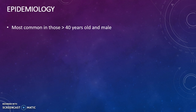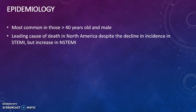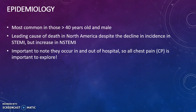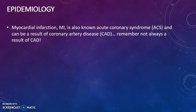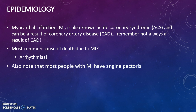Epidemiology. MI is most common in those who are over the age of 40 and male. It's the leading cause of death in North America, despite a decline in incidents of STEMI, though NSTEMIs are on the rise. It's important to note they occur in and out of hospitals, so all chest pain is important to explore. Silent heart attacks occur most frequently with the elderly, diabetics, and women. MI is also known as acute coronary syndrome (ACS) and can be the result of coronary artery disease, but also other causes such as cocaine use or broken heart syndrome. The most common cause of death due to MI is arrhythmias. Most people with MI do have angina pectoris.